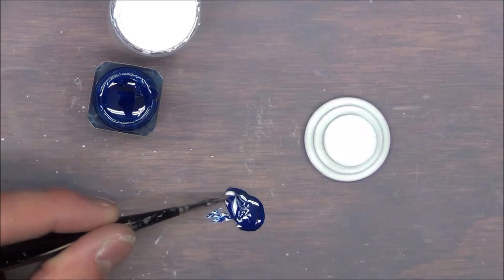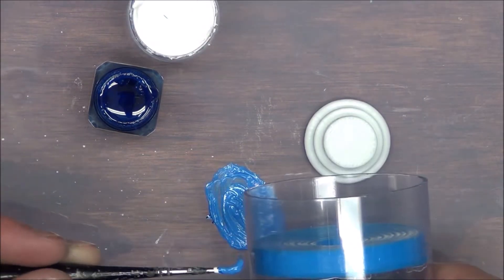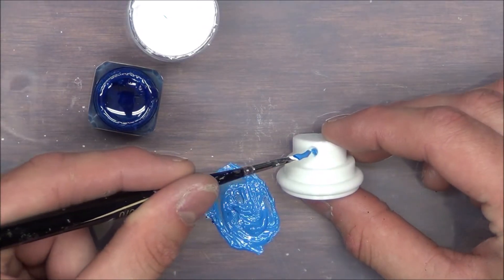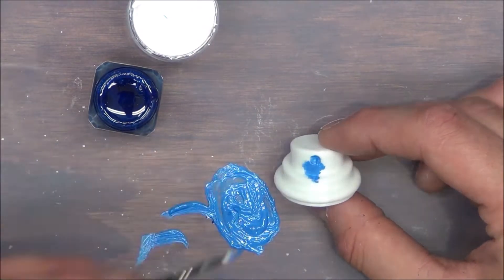While that dries, we're going to take the spray paint nozzle, match the paint color to the PLA we printed, and then paint around the nozzle to make it look like it actually came from a real used spray paint can.